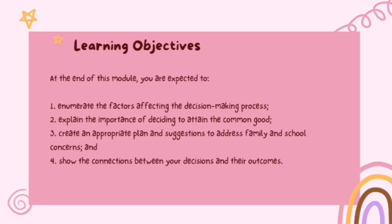Our learning objectives for this lesson are the following. At the end of this module, you are expected to: enumerate the factors affecting the decision-making process; explain the importance of deciding to attain the common good; create an appropriate plan and suggestions to address family and school concerns; and show the connections between our decisions and their outcomes.